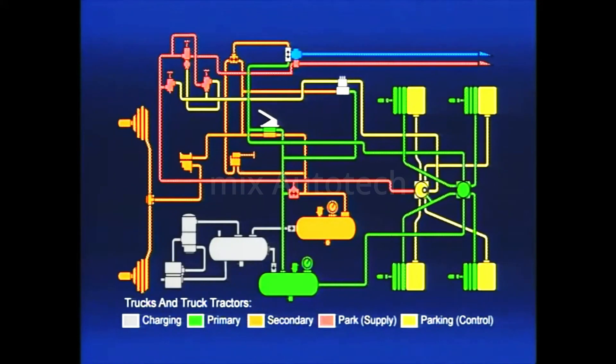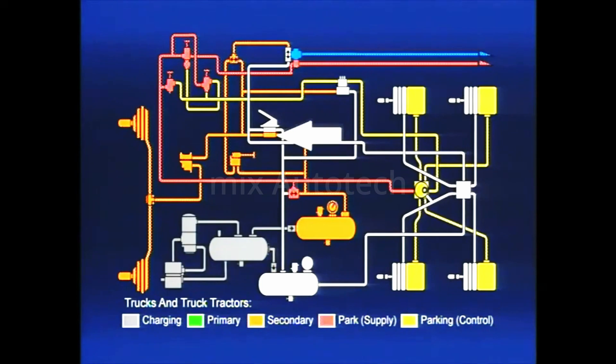Its primary function is to maintain modulated rear axle braking if primary reservoir air pressure is lost. Modulation takes place through the service foot brake, taking advantage of a driver's natural reactions in an emergency.